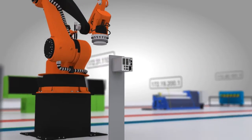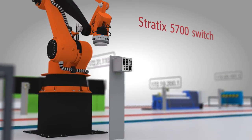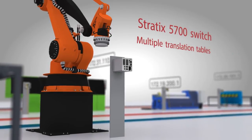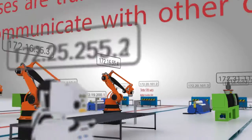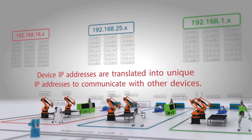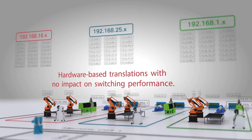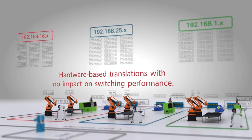Each device within a cell is connected to a Stratix 5700 switch, which can support up to 128 concurrent translations at wire speed and multiple translation tables. Device IP addresses are translated into unique IP addresses to communicate with other devices, all performed within the hardware itself without affecting switching performance.